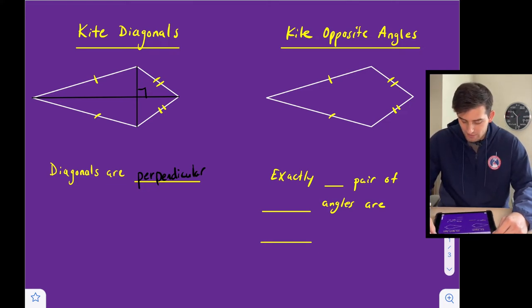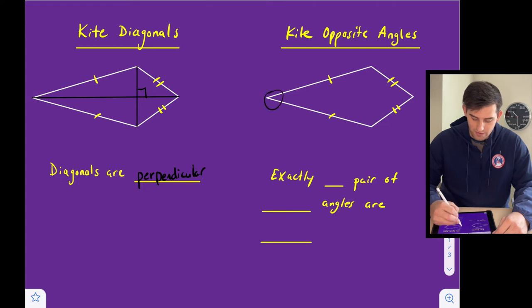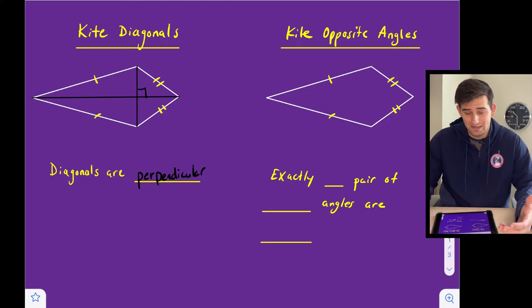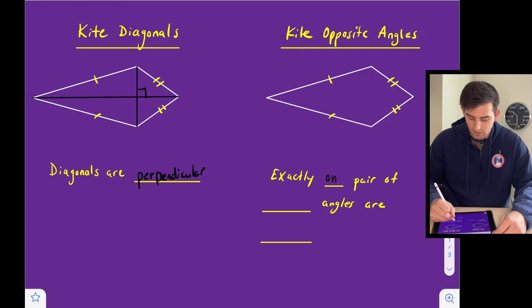Now, opposite angles. We have two pairs of opposite angles here. These angles are opposite and these angles are opposite. For a quadrilateral to be a kite, a property that a kite has is that it only has exactly one pair of opposite angles that are congruent.